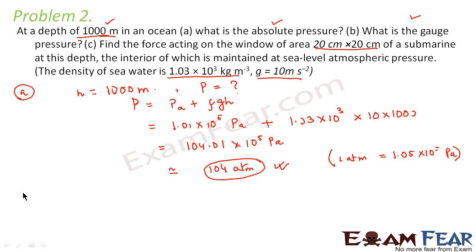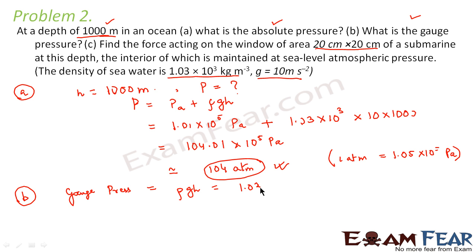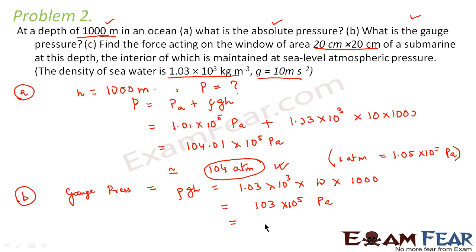For part two, we calculate gauge pressure. Gauge pressure is the difference between the pressure of the system and atmospheric pressure: P − PA = ρgH. So ρgH = 1.03 × 10³ × 10 × 1000, which comes out to be 103 × 10⁵ pascals, equal to 103 atmospheres. This is the gauge pressure.